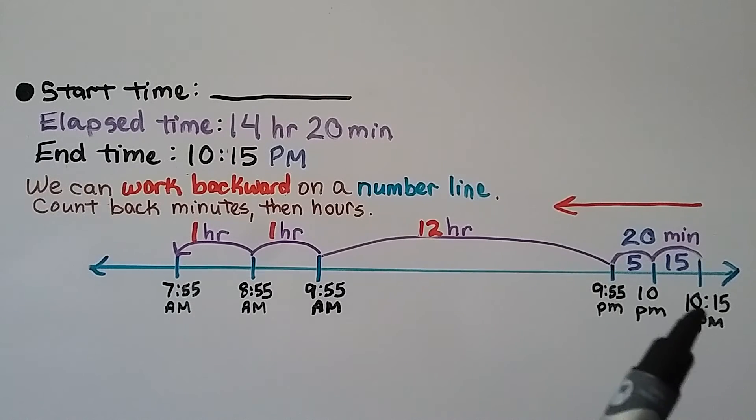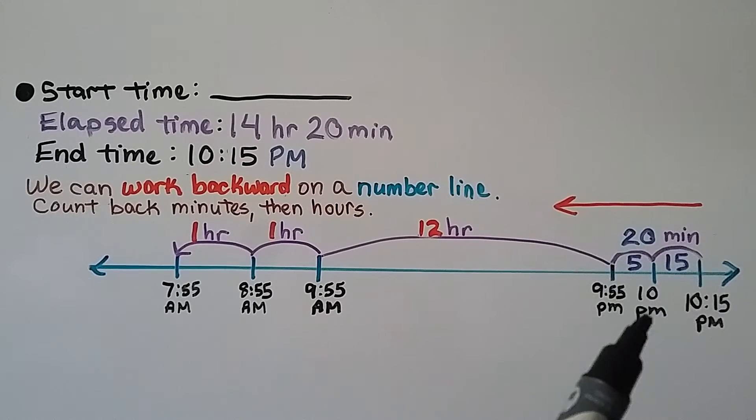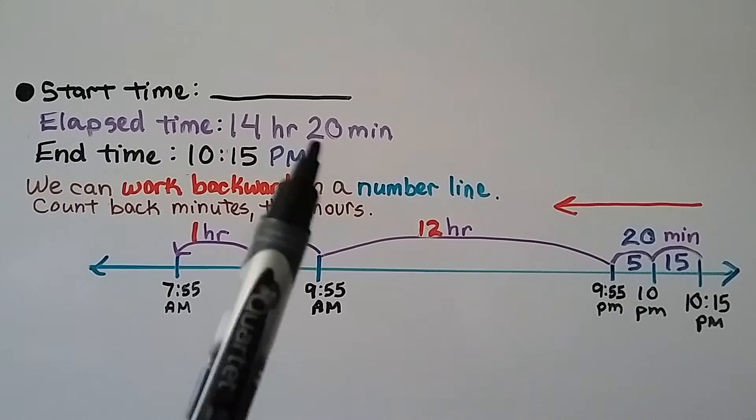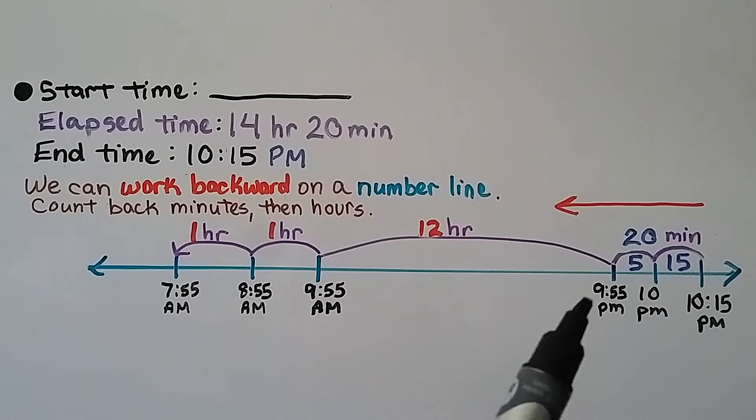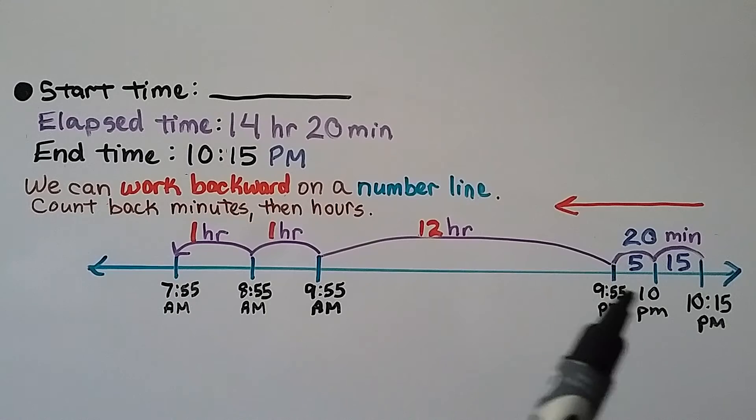So we're going to start over here at the end time of 10:15 PM. We can take away this 15 minutes on the 10:15. That'll put us to 10 o'clock PM. But we need to take away 20 minutes. So we go back five more minutes. That'll put us at 9:55 PM, five minutes before 10.